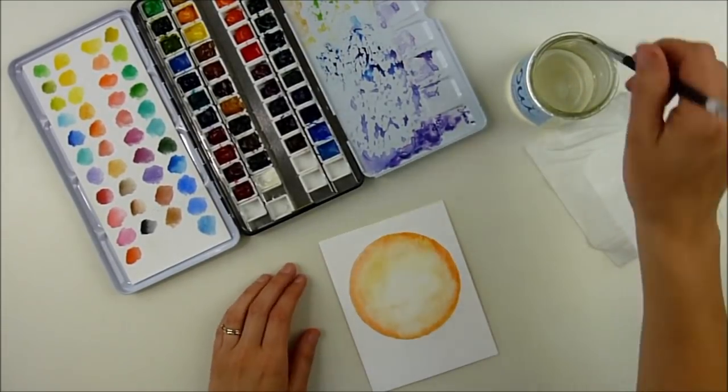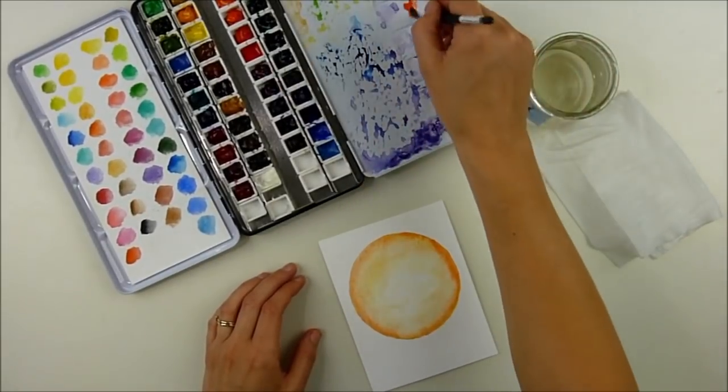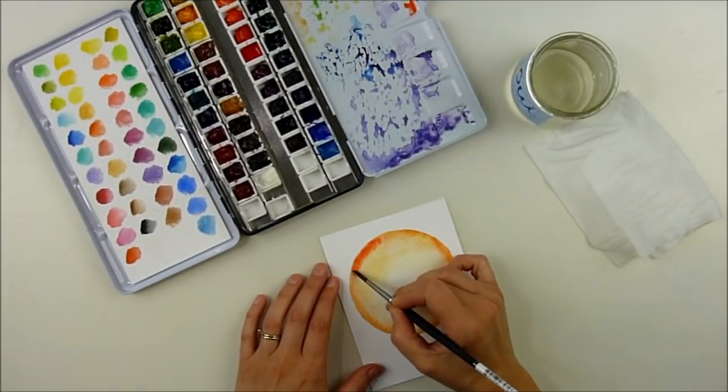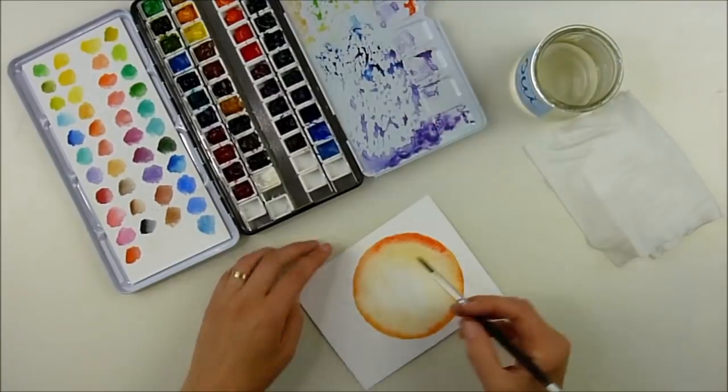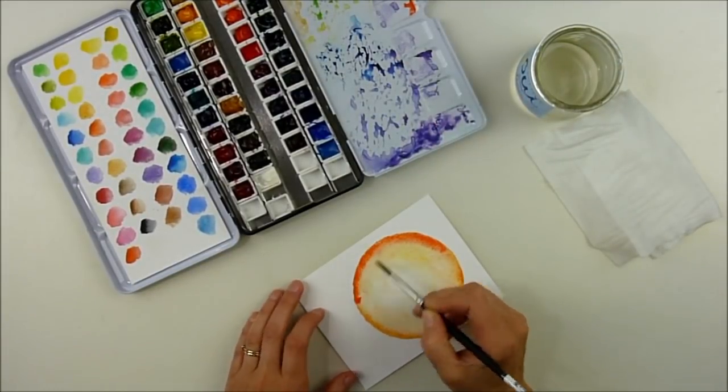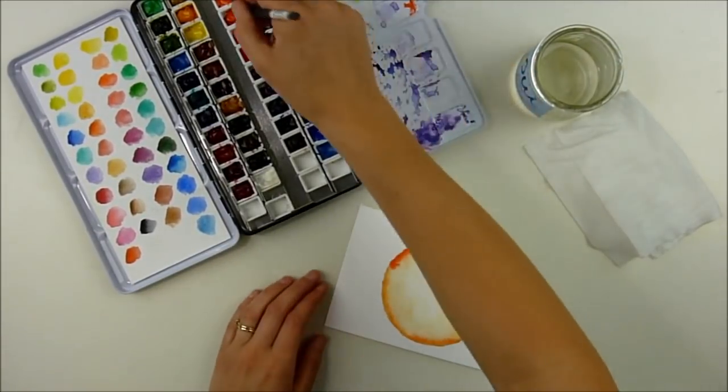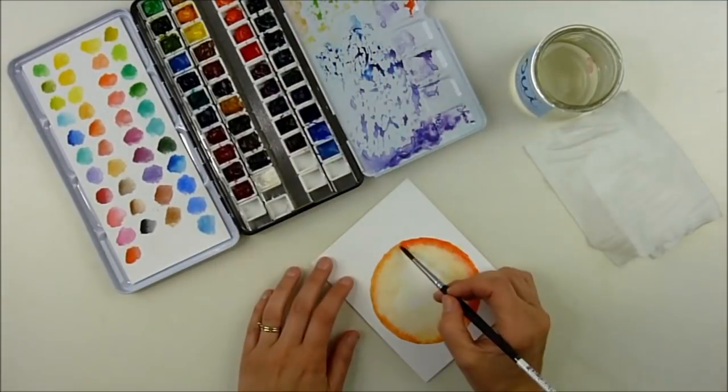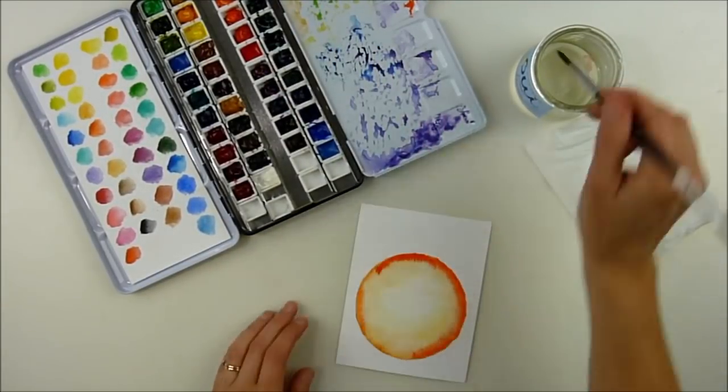Then I went into an orange and now I'm going into an even deeper orange. As I go around I quickly hit the outline of the circle, using my pencil line as a guide, then I come in with more water and blend it in towards the center.